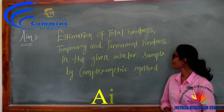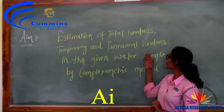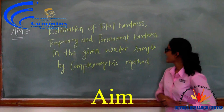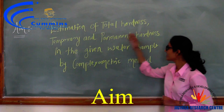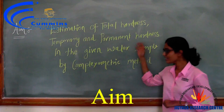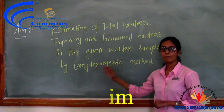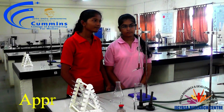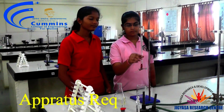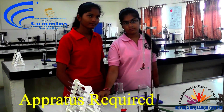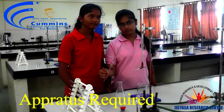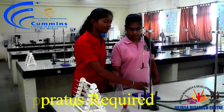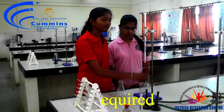Today we are going to perform the estimation of total hardness experiment. The aim is estimation of total hardness, temporary and permanent hardness in the given water sample by complexometric method. The apparatus used in this experiment are burette, paper, conical flask, beaker, and burette stand.